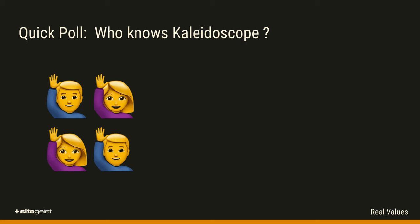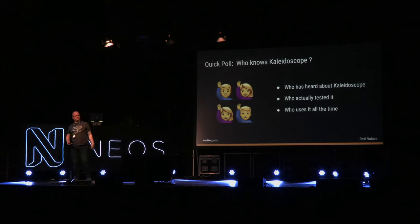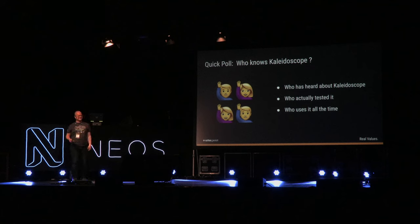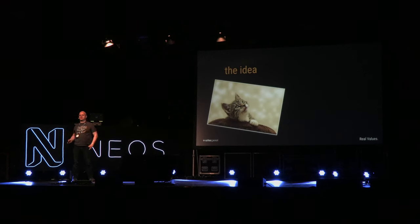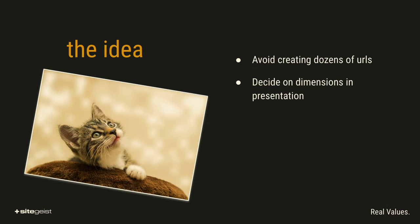When tasks are error-prone, it's a good idea to consider automation. For that, we created Zeitgeist Kaleidoscope. Who has already heard about Kaleidoscope? Who tried it out? Who uses it all the time? About half — surprising, cool. The idea behind Kaleidoscope is as follows: we wanted to automate the generation of multiple image URLs, make decisions about rendered dimensions on the presentation side to avoid communication problems, and make spotting errors as easy as possible — ideally in the style guide. Aside from that, we wanted to stick as close to the HTML standard as possible.